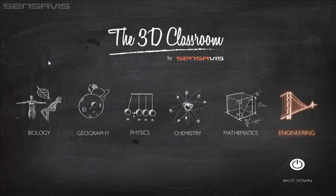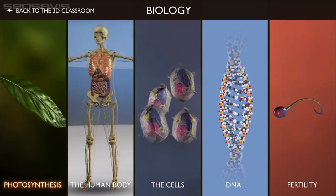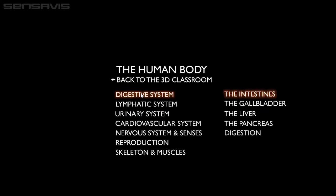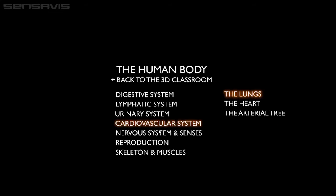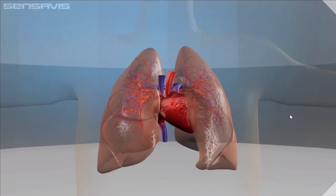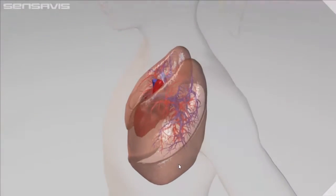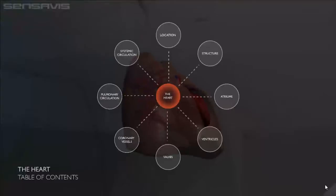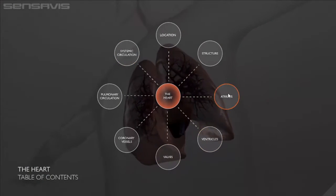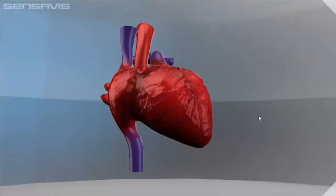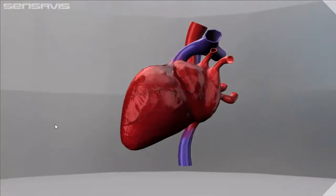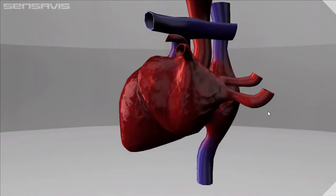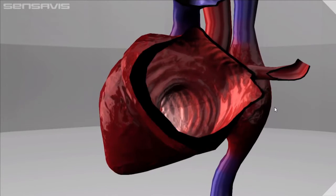Our products consist of 6 subjects. I'm going to take you to biology and show you the human body. The human body is divided into systems with subcategories. I'm going to open up the cardiovascular system and show you the heart. Every organ in the body starts with orientation. You can easily move around and orient the students where the heart is positioned in the body. If you open up the table of content, you will get all the different scenes surrounding the heart. I'm going to show you structure where you can show the students different parts of the heart. Or you can go straight inside and look at the beating heart from the inside.